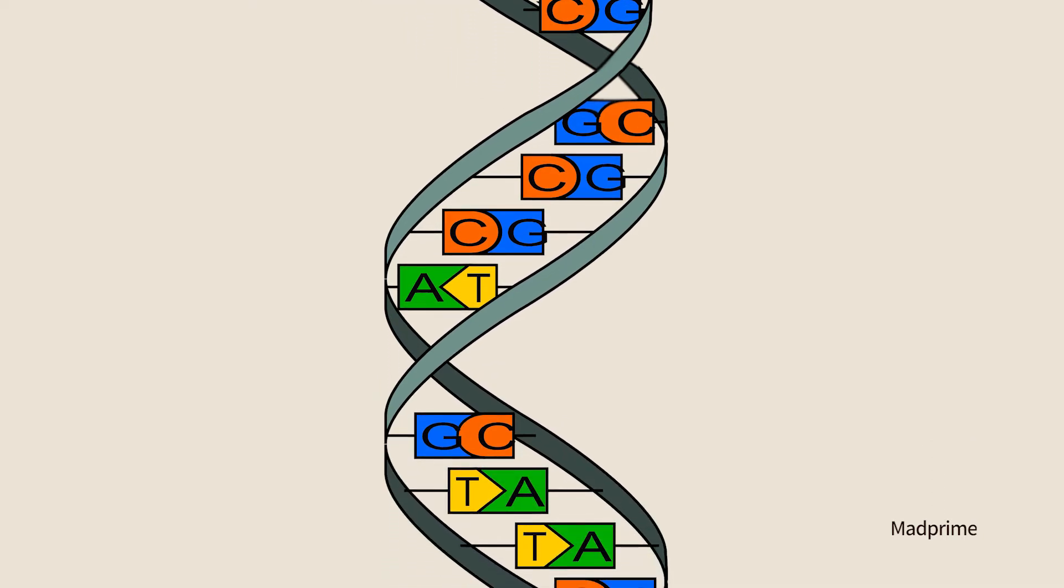Opposite to every A is a T and opposite to every C is a G. One strand encodes the genetic information and the other complements it.